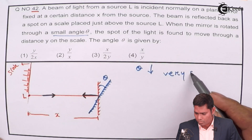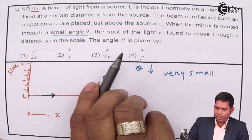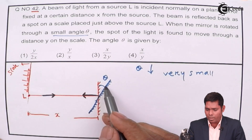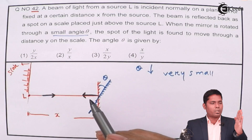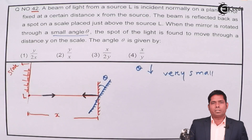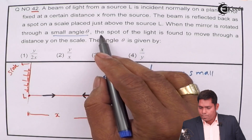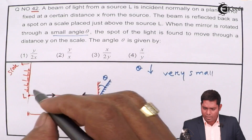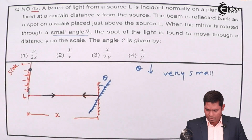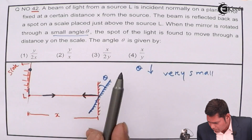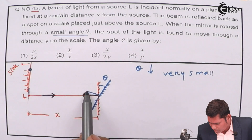If this mirror is rotated by theta, then this ray is no longer normal to this mirror. Earlier it was normal. If I rotate this, the ray is not normal now, because the normal will be somewhere else and the ray will get reflected at a certain angle. When the mirror rotates by theta, the normal also rotates by theta — whatever angle the mirror moves, the same angle the normal moves.